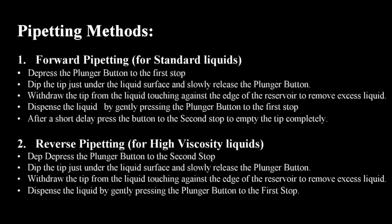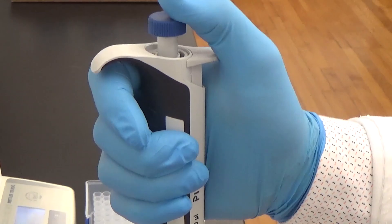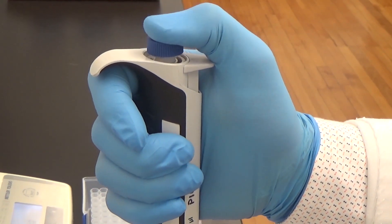There are two pipetting methods. Forward pipetting is used for standard liquids as reverse pipetting is used for high viscosity liquids. First, we'll be talking about forward pipetting.